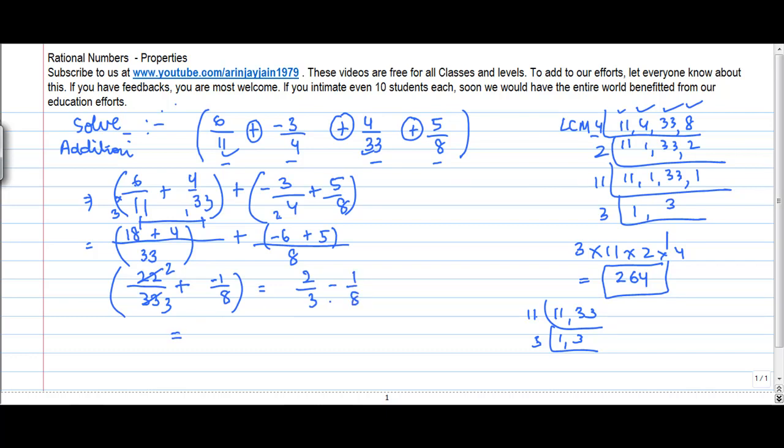Now, at this stage, if I take the LCM of these two numbers, it becomes 24, which is much more easier vis-a-vis 264. 24 goes into 3 eight times. 8 into 2 gives me 16. 24 goes into 8 three times. 3 into 1 gives me 3, so minus 3. Or, 13 by 24 is the answer.